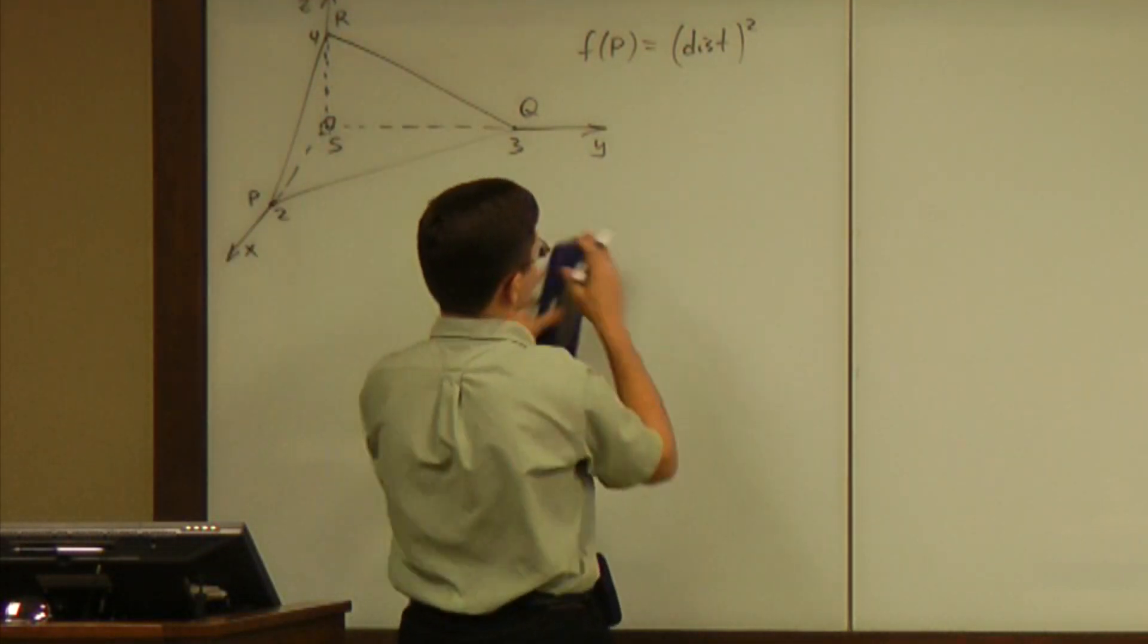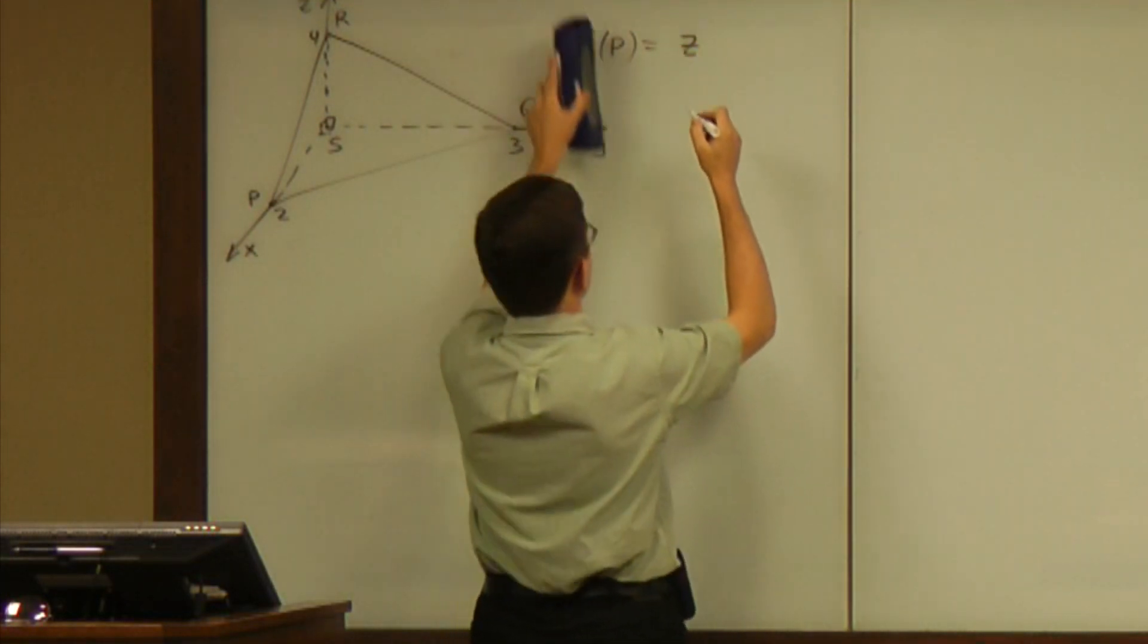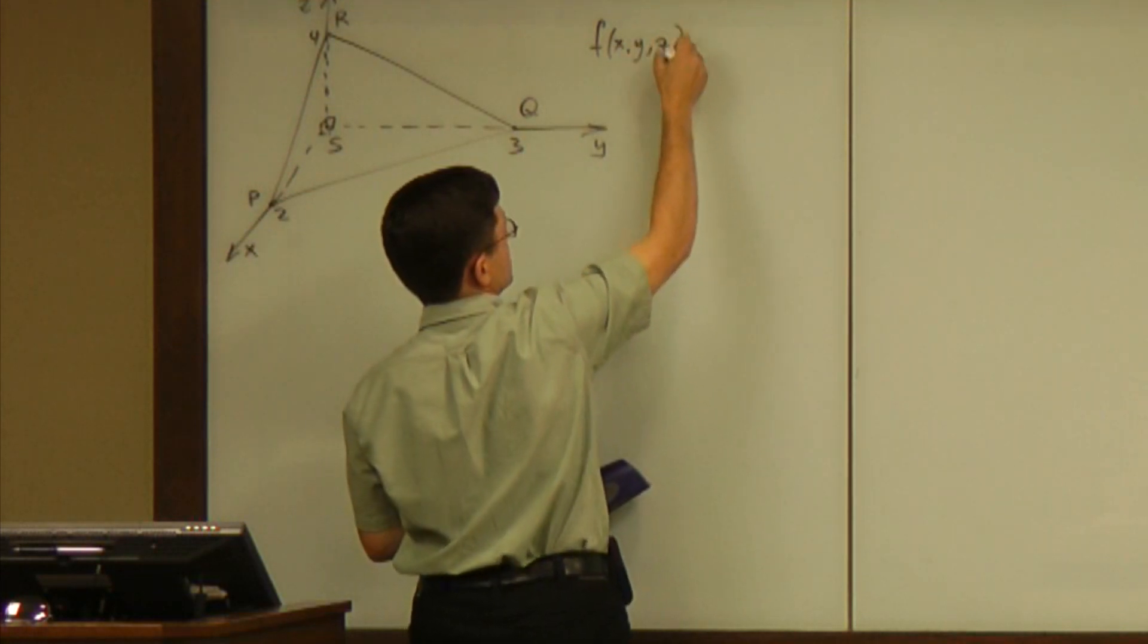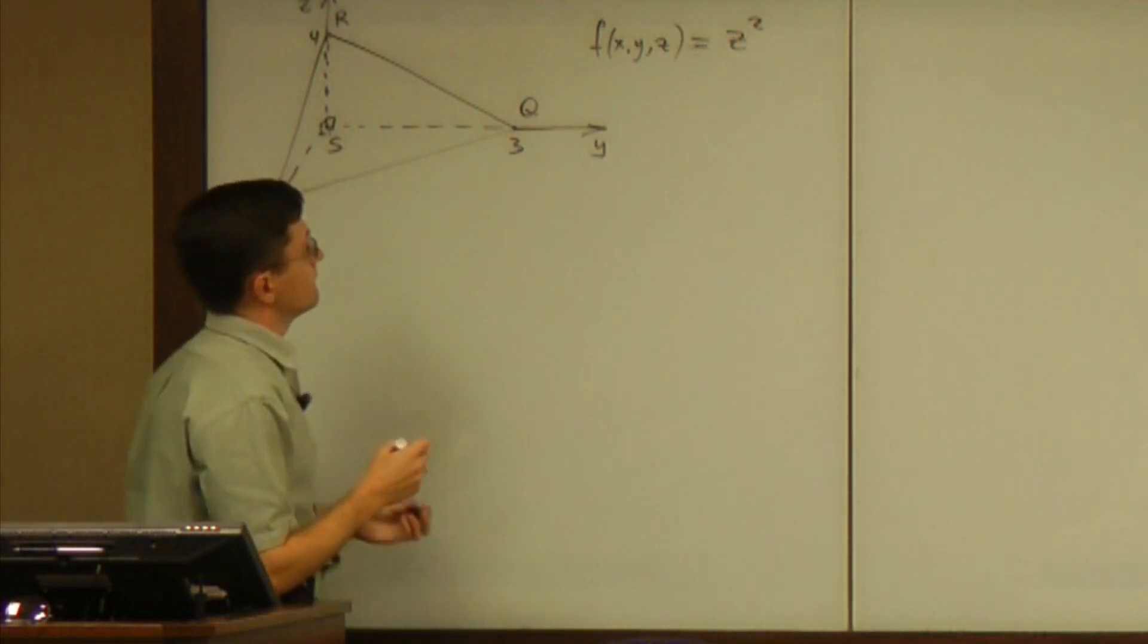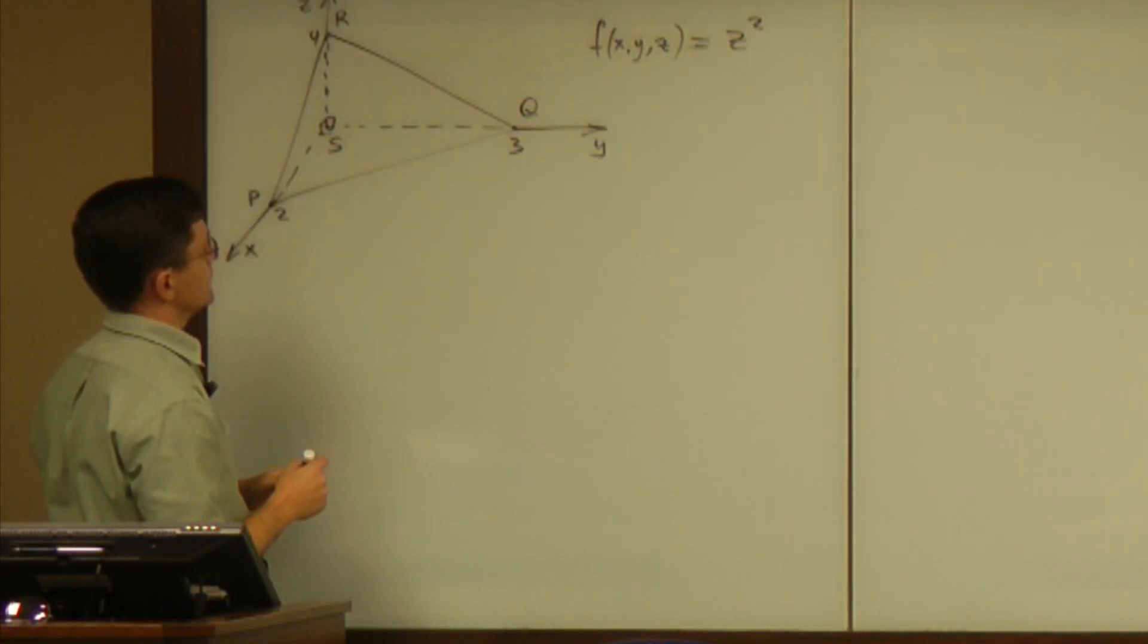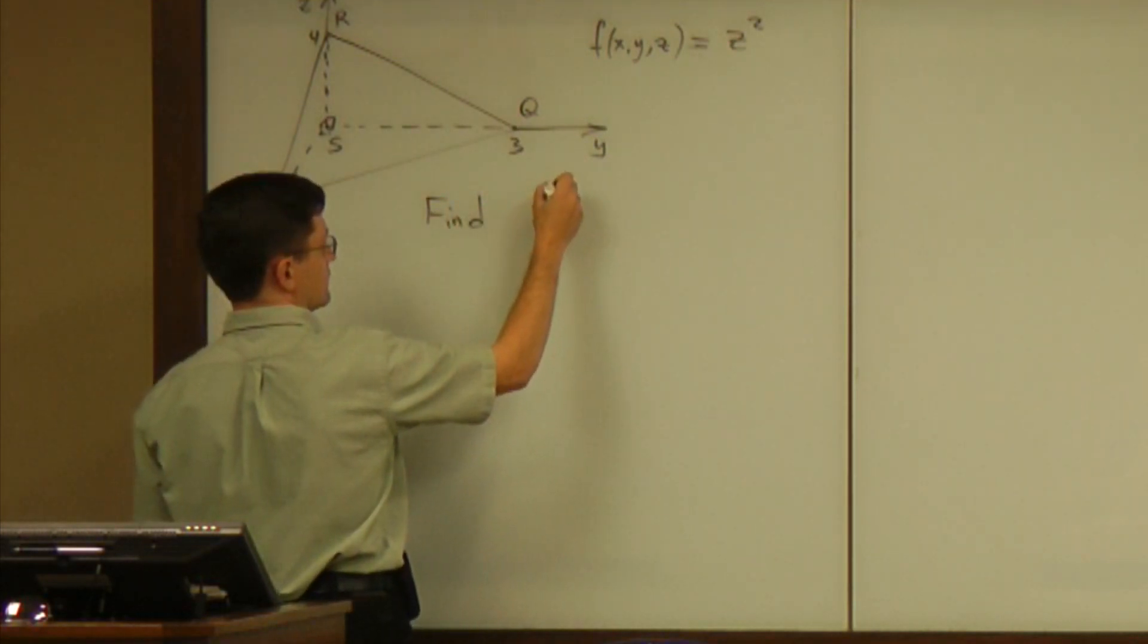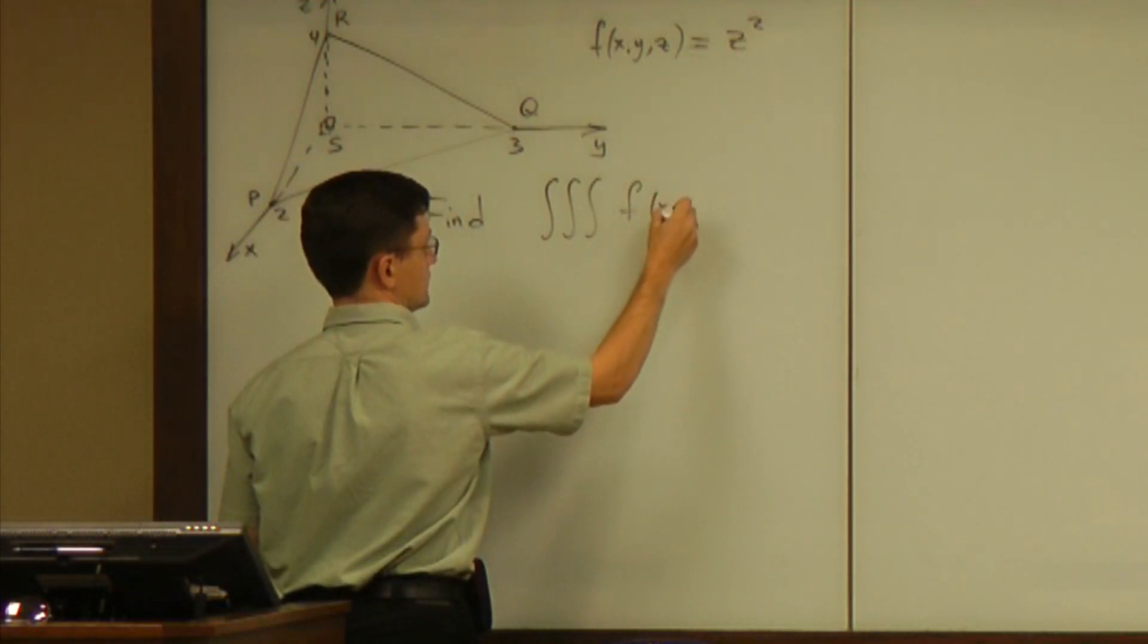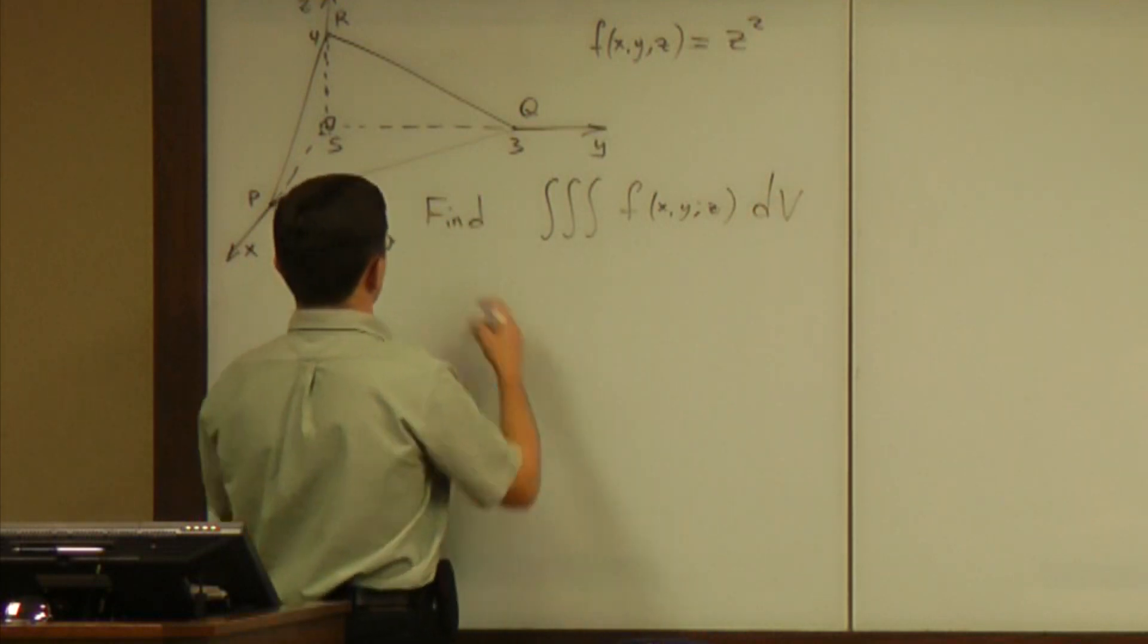So, according to this coordinate system, the function is going to be F of X, Y, Z equals Z squared.